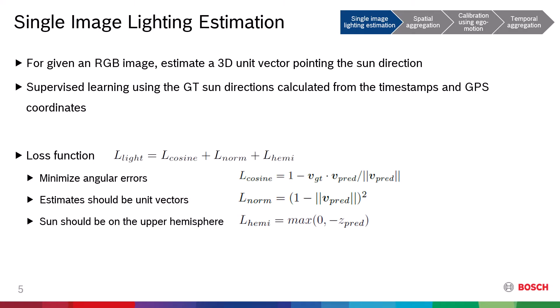Let me move on to explain our method in detail. For each sub-image, we perform the single image lighting estimation. Our network receives an RGB image and outputs a 3D unit vector pointing to the sun direction. We train the network in a supervised manner where we calculated the ground truth sun directions from timestamps and the GPS coordinates.